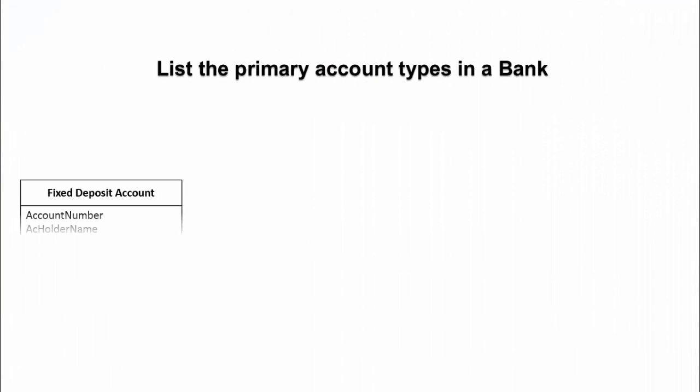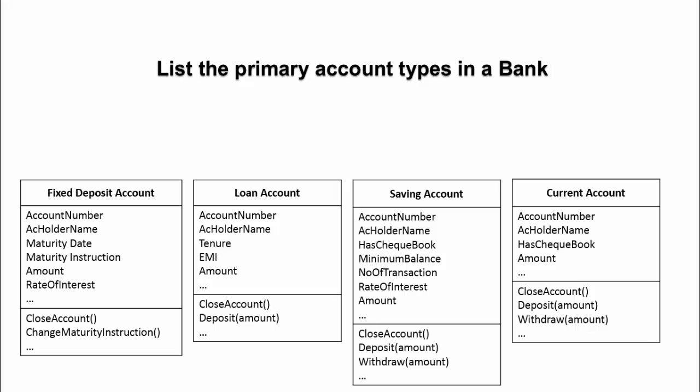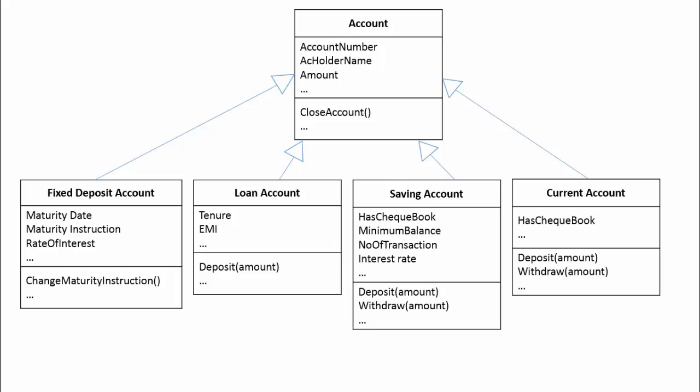Now, let's try to list all the primary account types in a bank as class entity with properties and methods. We can easily spot that there are many common members among these classes. So let's create a generic entity called account which will have all common elements and let the child account types contain specific members required for those account types. In inheritance relationship, parents are more generalized and child classes are more specialized. Hence, the relationship is also known as generalization-specialization relationship or simply generalization.